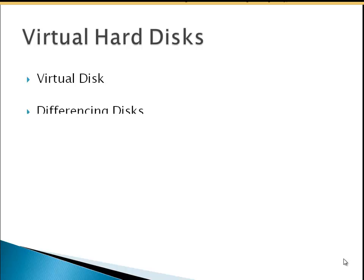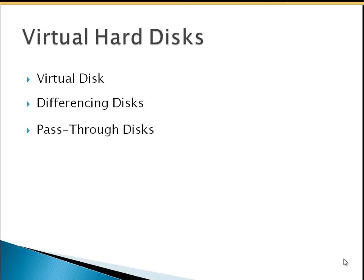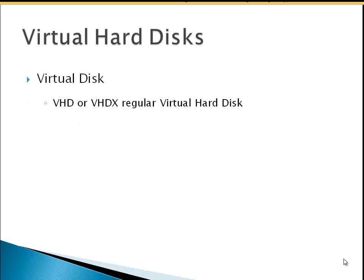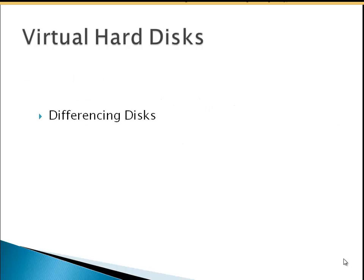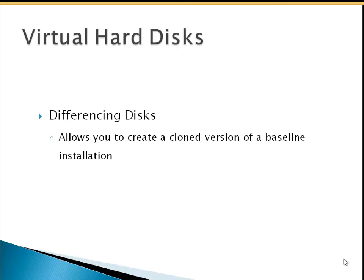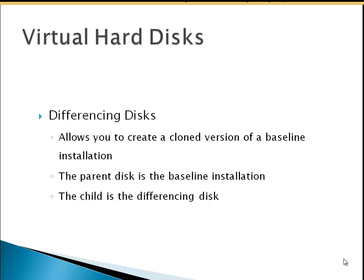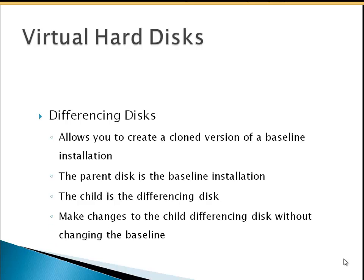Virtual hard disks come in different types: virtual hard disks, differencing disks, and pass-through disks. A virtual hard disk is either VHD or VHDX — a regular virtual hard disk. Hyper-V allows you to create virtual hard disks as part of virtual machines or create them later and add them. Differencing disks allow you to create a cloned version of a baseline installation. The parent disk is the baseline installation and the child is the differencing disk. You can make changes to the child differencing disk without affecting the baseline, and revert back to the baseline installation at any time.